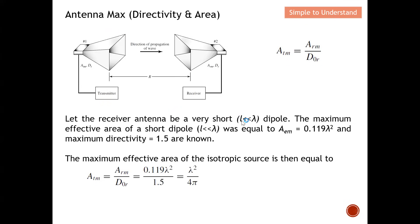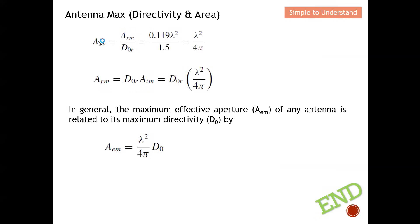For a short dipole antenna — where the antenna length is very small compared to the wavelength — the maximum effective area is given by A_rm = 0.119 λ², and we know the maximum directivity of a short dipole is 1.5. Substituting these into the isotropic effective area equation gives the maximum effective area of the isotropic source.